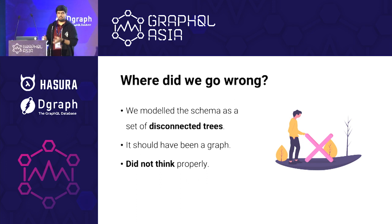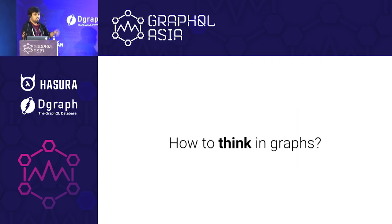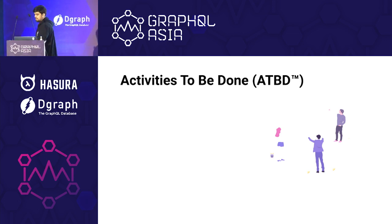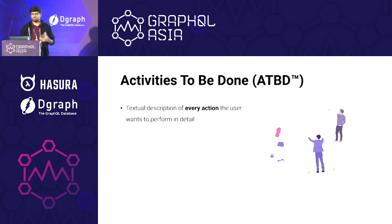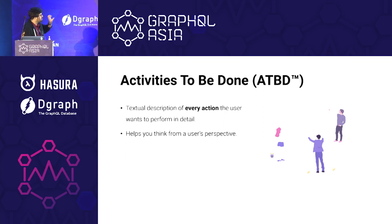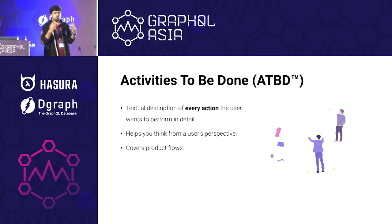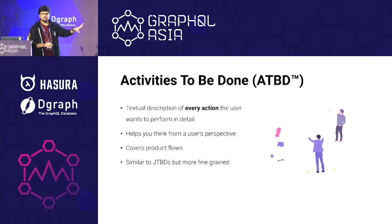This talk is geared towards giving you a structured thinking approach while you are building GraphQL schemas. So how do we think in graphs? The first step in this structure is what I call 'activities to be done' — this is not an industry term, I just coined it. It is a textual representation of every user action: a user wants to purchase, a user wants to see a listing of all the products. It's a simple, blatant description which helps you think from a user perspective. It also helps you cover product flows and discover things which might have been missed in a specification. For people who are aware, it is very similar to JTBDs (jobs to be done), but activities are much more fine-grained.